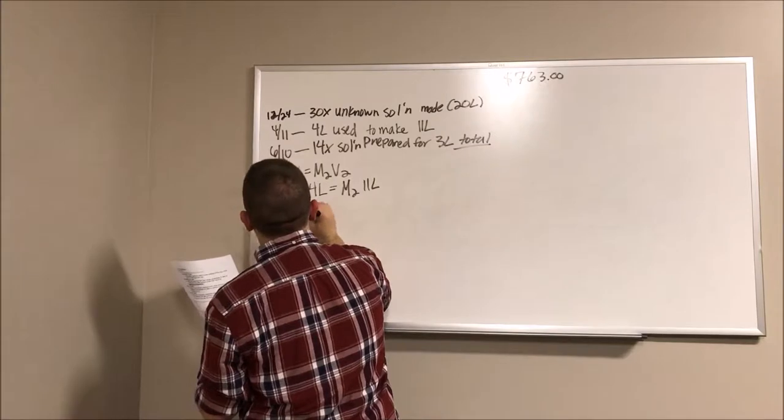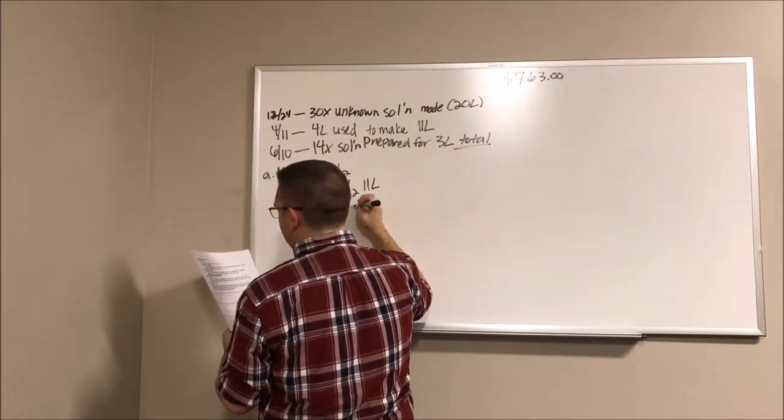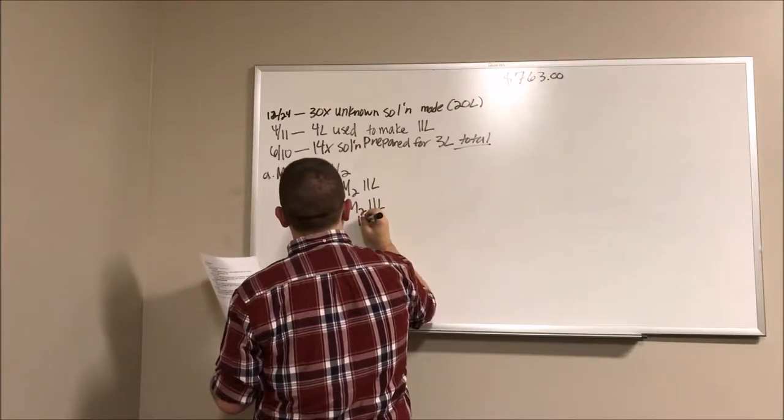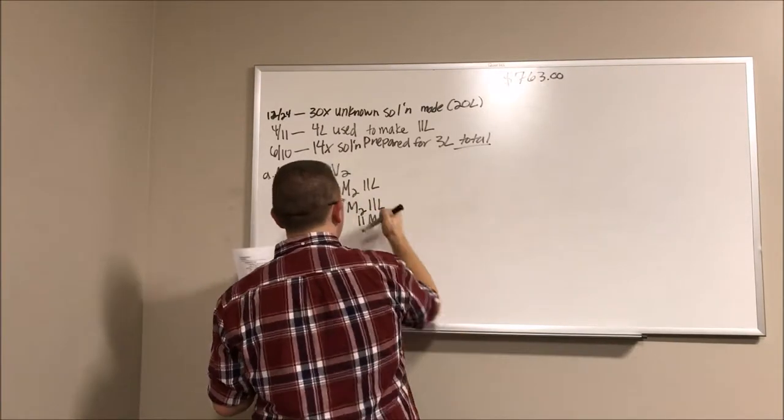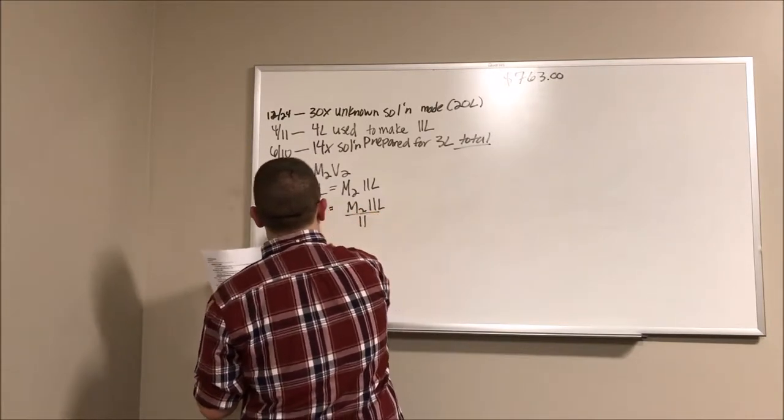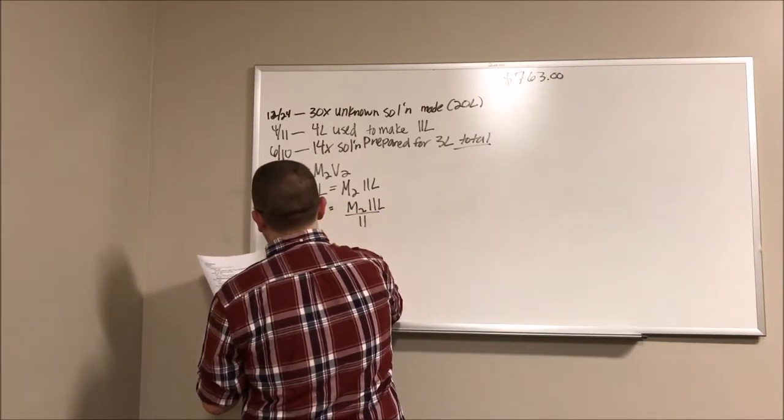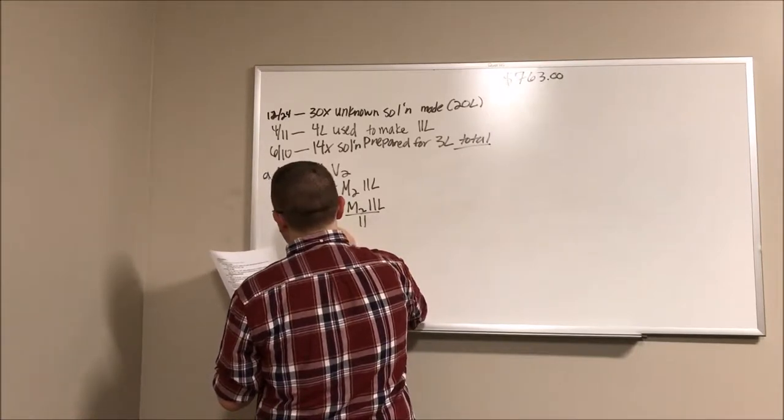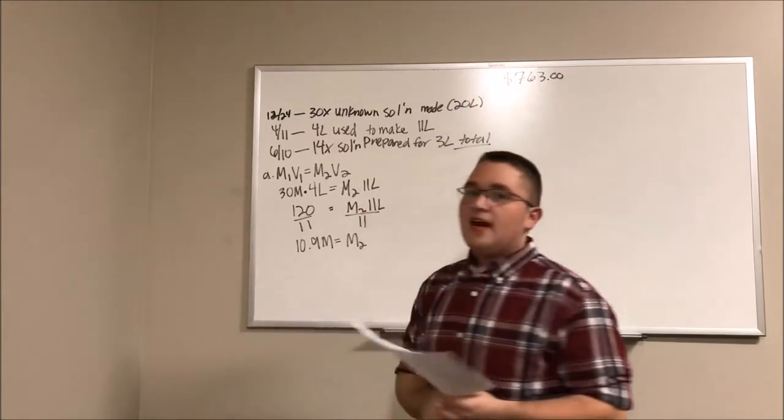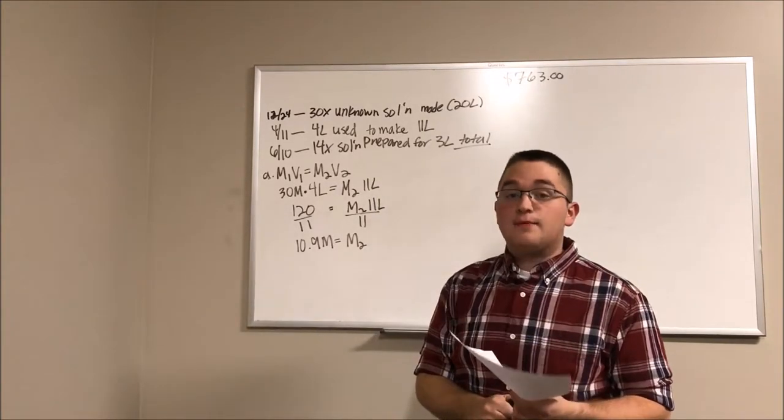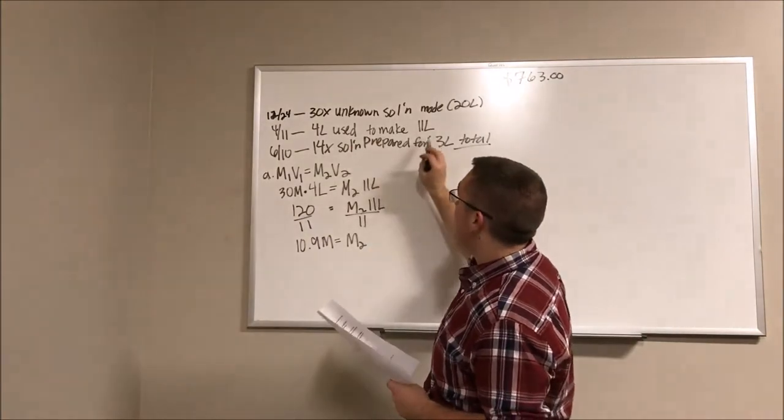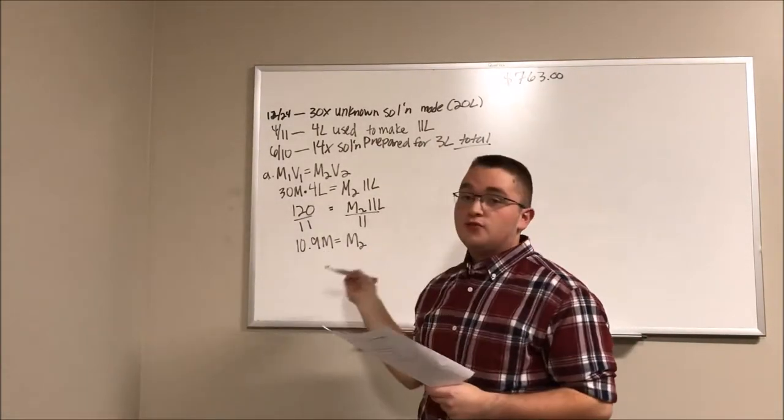So we calculate this out to get 120, which equals M2 times 11 liters. We're just going to divide both sides by 11, just for simplicity. And then that will yield us with 10.9. So this is essentially saying that the concentration at the end is 10.9. So by using 4 liters to make 11 liters, our concentration then drops to 10.9.